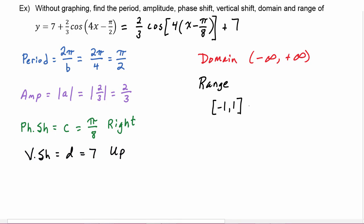So we know because the amplitude is equal to 2/3, that would mean that the range would become negative 2/3 to positive 2/3. Then it is affected by the vertical shift where D is equal to 7, and it's a positive 7, it's going upward.